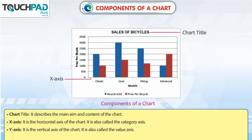X-Axis: It is the horizontal axis of the chart. It is also called the category axis. Y-Axis: It is the vertical axis of the chart. It is also called the value axis.